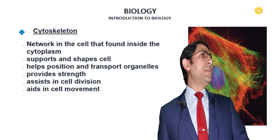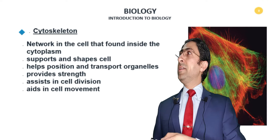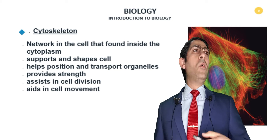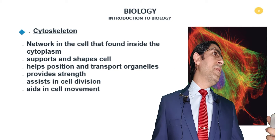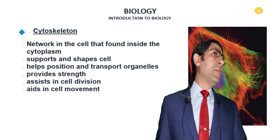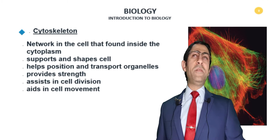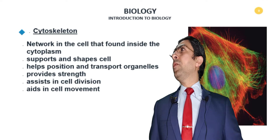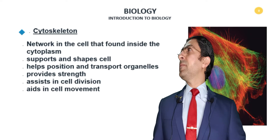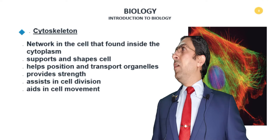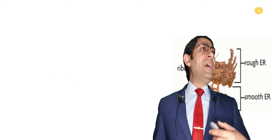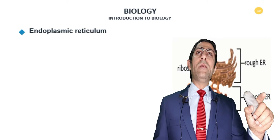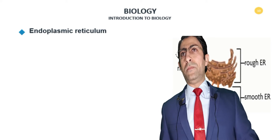Cilia are considered part of the cytoskeleton — protrusions from the cell surface that play a role in movement. They may also trap food particles to be eaten, playing a role in the feeding process and attracting substances towards the cell surface, such as those found in paramecium. Flagella are also protrusions that help in movement; they sweep so the organism can propel itself, such as in euglena.